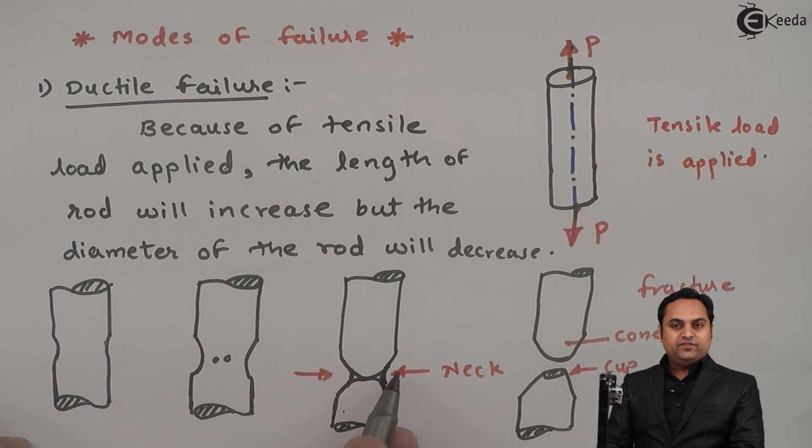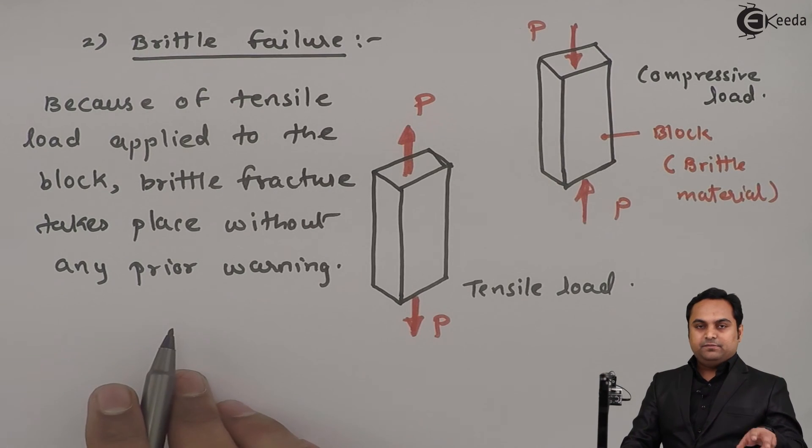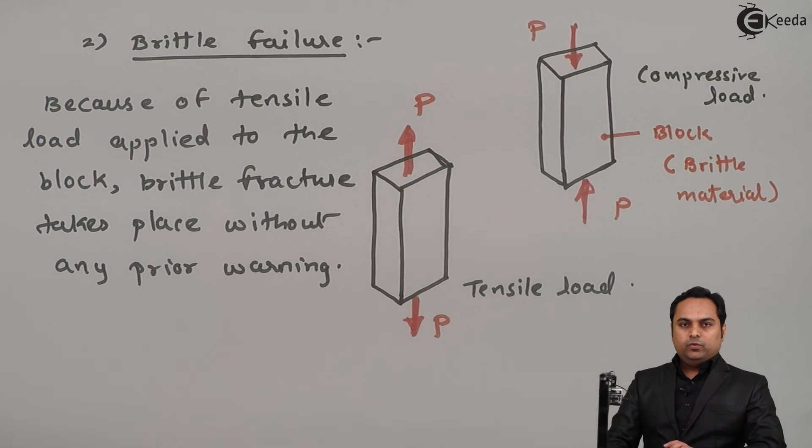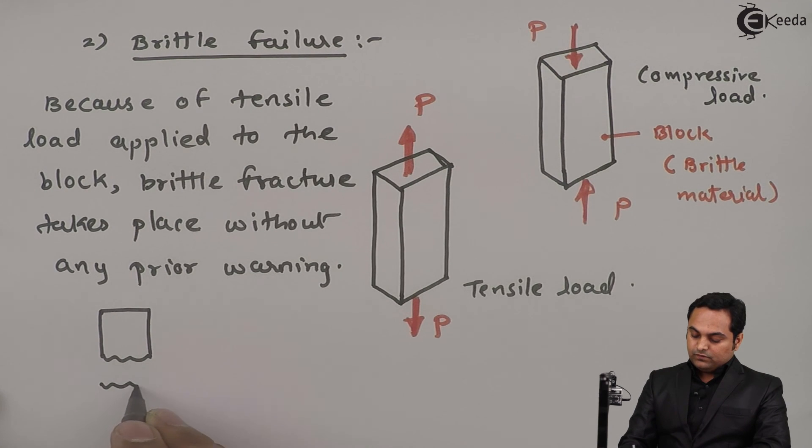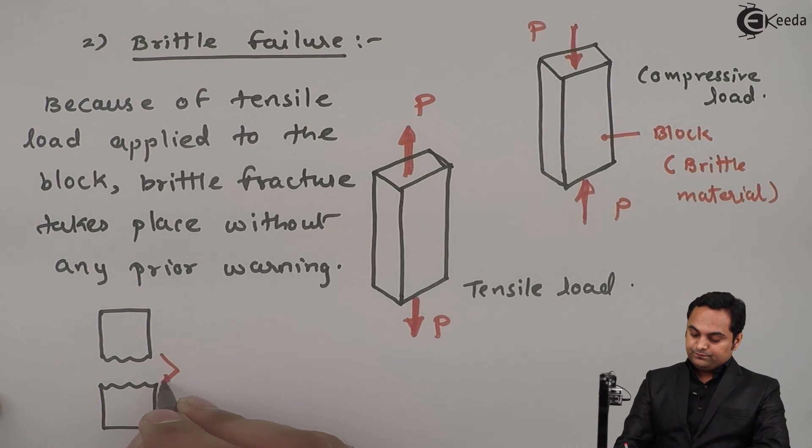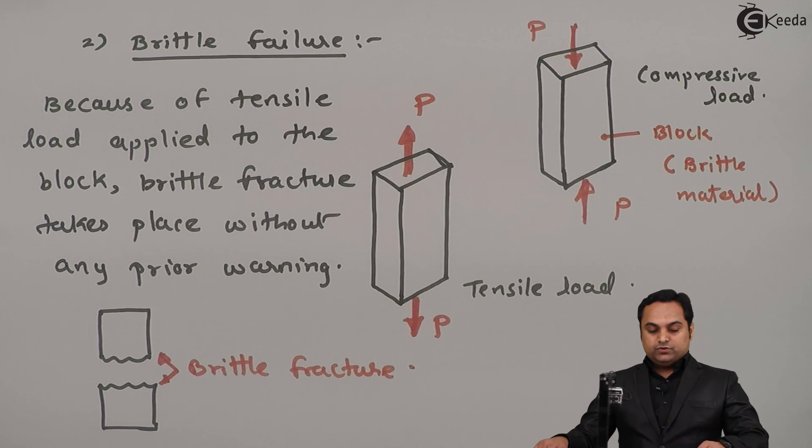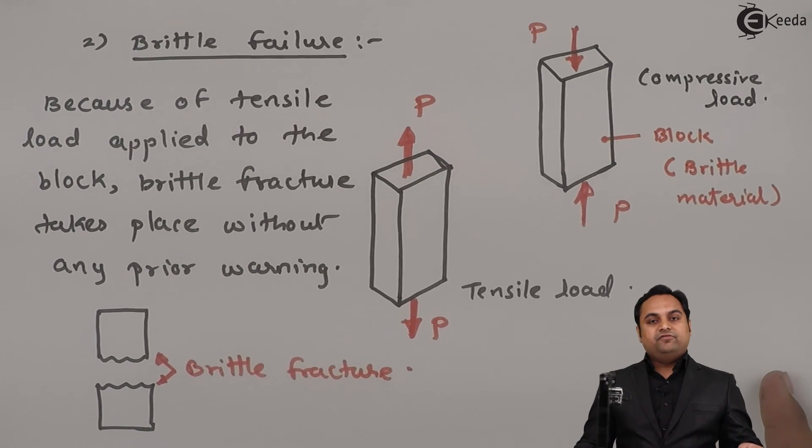But in case of brittle materials it is a direct fracture without any indication. After breaking, the material will be somewhat like this, and this is called brittle fracture. In this video we have seen the modes of failure.